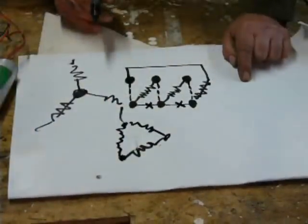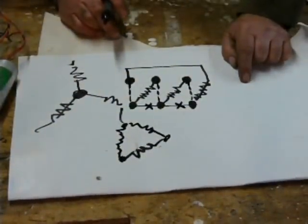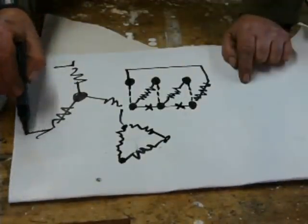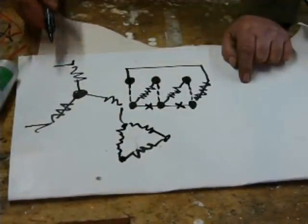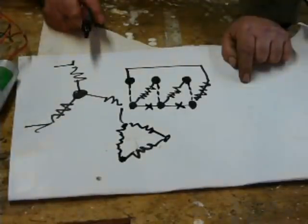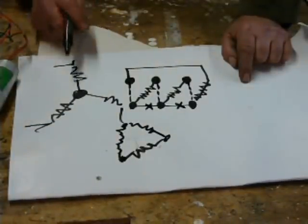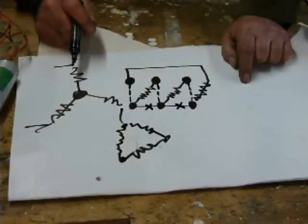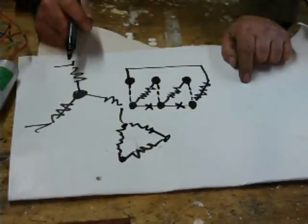Now if you imagine in this case, you're putting 415 volts across there. So you've got two coils in series. So effectively, each coil is half of that 415 volts - say 210, something like that.